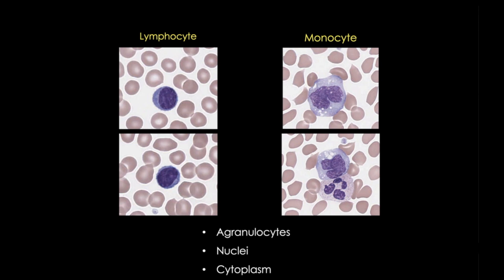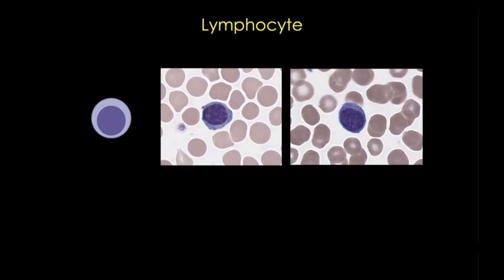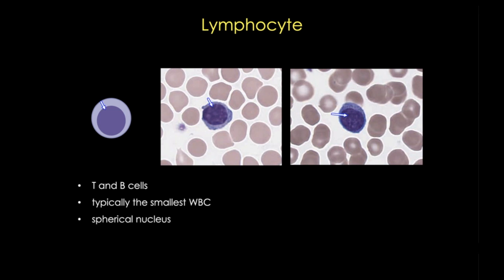Let's take a look at the lymphocyte first. Lymphocytes, which give rise to B lymphocytes and T lymphocytes, are the second most numerous white blood cell and the most numerous agranulocyte in normal blood. They're typically the smallest white blood cell. The most obvious characteristic of the lymphocyte is its spherical nucleus with highly condensed chromatin. Lymphocytes are sometimes arbitrarily classified as small, medium, and large — the small group being the most common.